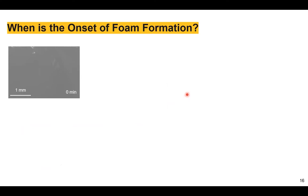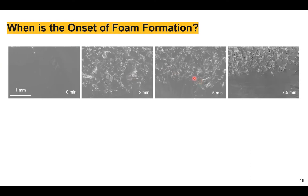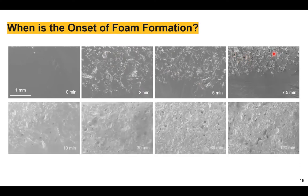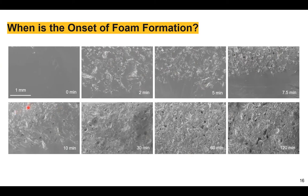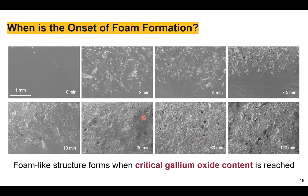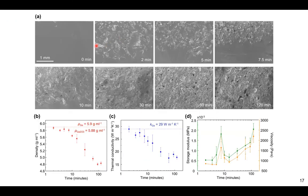I investigated systematic mixing times for foam production. Starting with as-prepared gallium, after several minutes of mixing, gallium oxides — crumpled and wrinkled — start dispersing into the liquid metal, with onset of air pockets observed around 7.5 minutes. Around 10 minutes, gallium oxide and air content continue to grow, and around 30 minutes to two hours, this porous foam-like structure is formed. Different mixing times produce very different internal structures due to the dynamic nature of the processing method, but foam-like structures form once some critical oxide content has been reached.